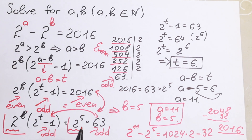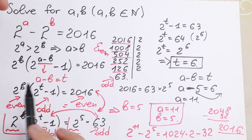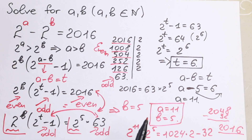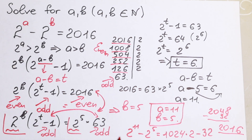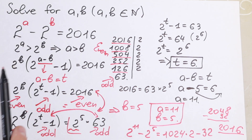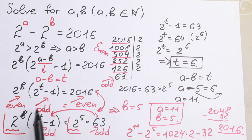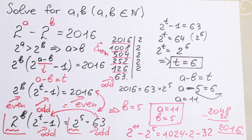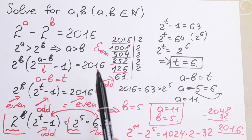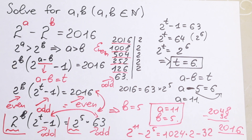Really good, really good question. I really like this kind of question because it's not about really hard formulas or higher mathematics — it's just a chilling algebra problem. The main steps are: factoring out 2 to the power B, then expressing 2016 as even times odd. That's the key insight you need to understand to solve this kind of question.